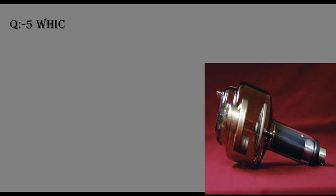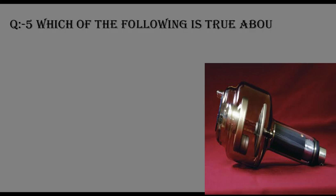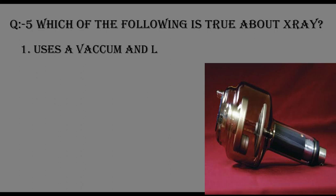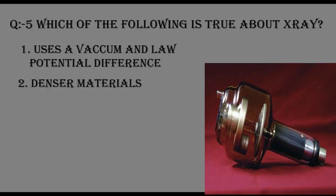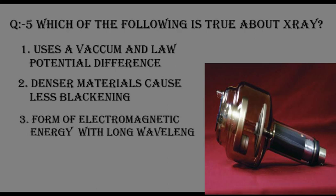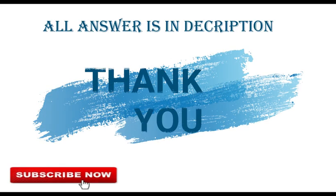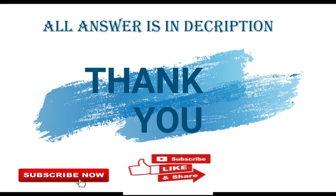Question number five: which of the following is true about X-rays? Number one: uses a vacuum and low potential difference. Number two: denser materials cause less blackening. Number three: form of electromagnetic energy with long wavelength. Number four: all of the above. The correct answer is in the description.